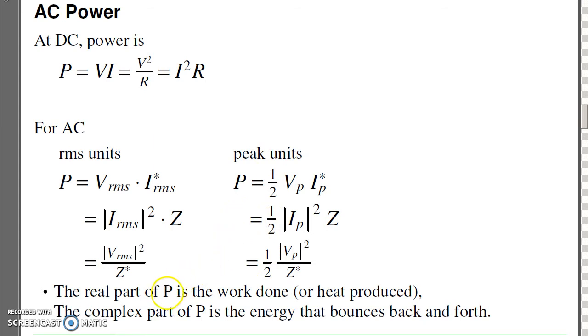When you have complex power, I've got two parts, the real and complex part. The real part is the work done. That's the power being produced by the motor, the heat coming out of the resistor. The complex part is just energy bouncing back and forth, typically between the inductance and capacitance in the circuit.